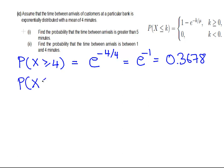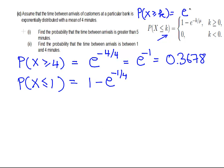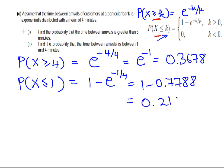Now, the probability of X less than or equal to 1. That is equal to 1 minus the exponential of 1 divided by 4, again using the formula. The probability of X greater than k is just e to the power of minus k over mu — these two expressions are the complements of each other. This is equal to the exponential of minus 0.25, which works out to be 0.7788. So it is 1 minus 0.7788, and that is equal to 0.2212.